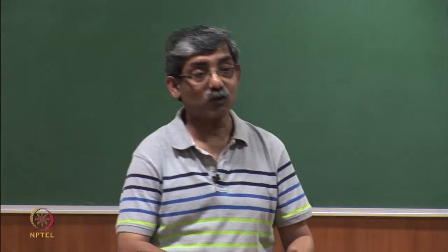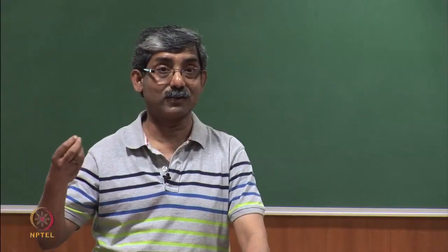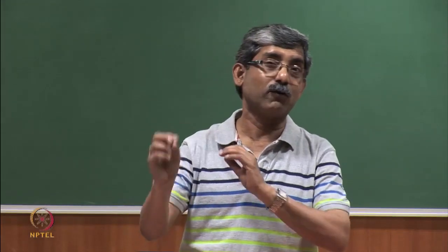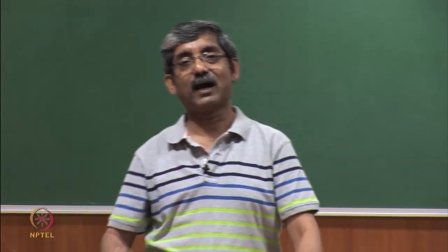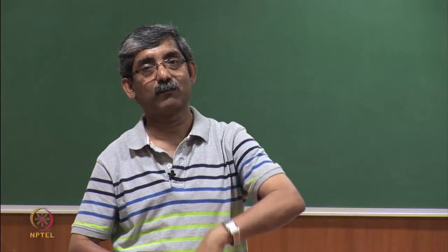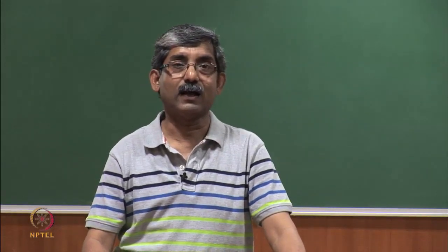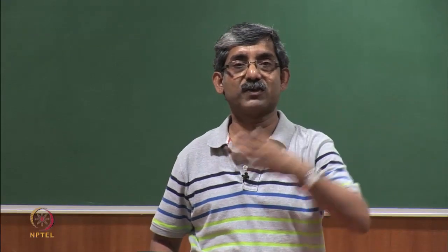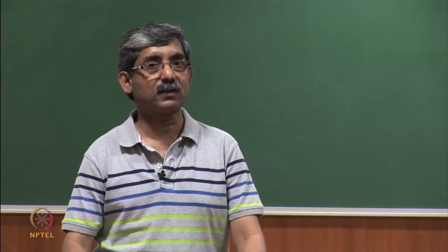The third mechanism is adsorption and transmission. Adsorption means moisture will get adsorbed on the surface of the fibre — typically in micro-droplet liquid form — and then it will get transmitted through the surface, ultimately going to the outer surface where it will be evaporated. That phenomenon is known as adsorption and transmission. The last one is forced convection — in case of wind blowing through the fabric surface, it will take away all the moisture vapour and the moisture will get transmitted through forced convection. We will discuss all these aspects.